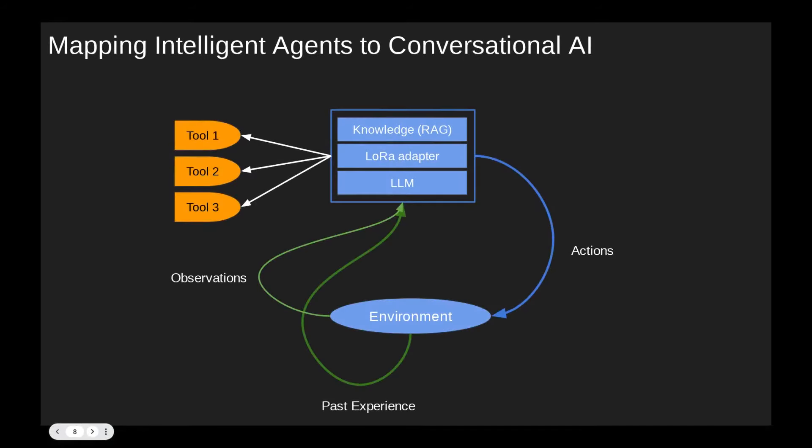When we apply this abstract definition to the conversational AI domain, the agent becomes a software component whose decision-making is powered by a large language model. In addition, the LLM may be fine-tuned using LoRa adapters to make it more effective at specific tasks. Its knowledge can be expanded through a retrieval augmented generation mechanism and its actions are executed using various provided tools.